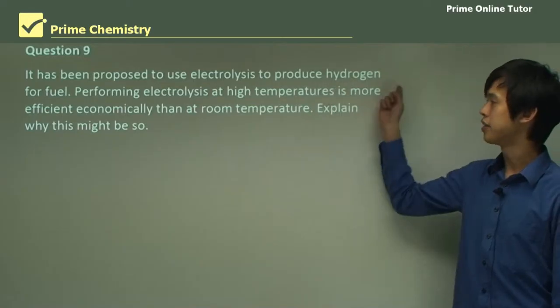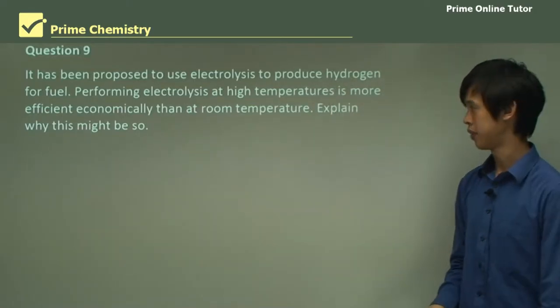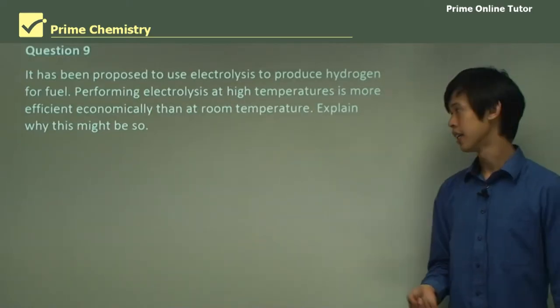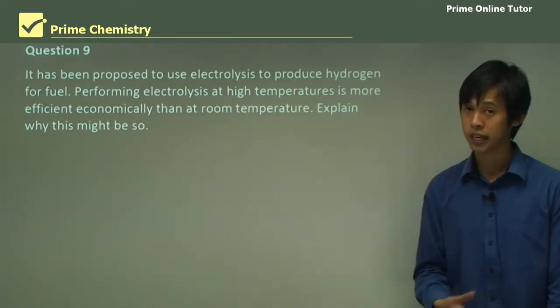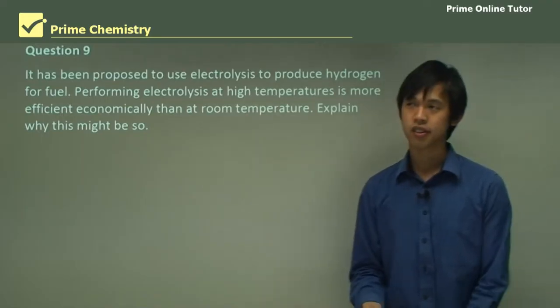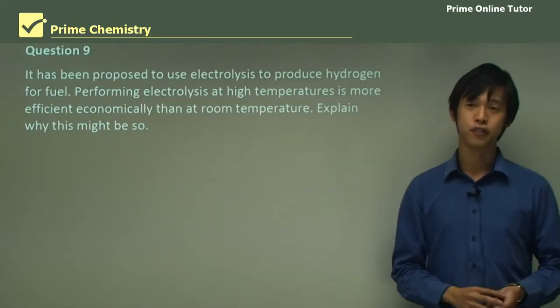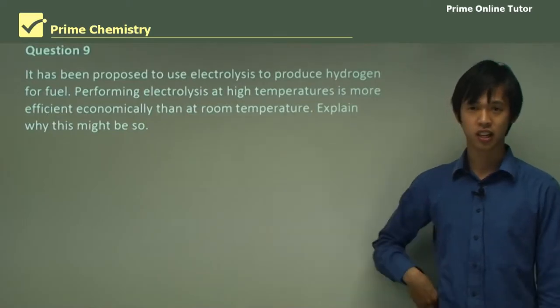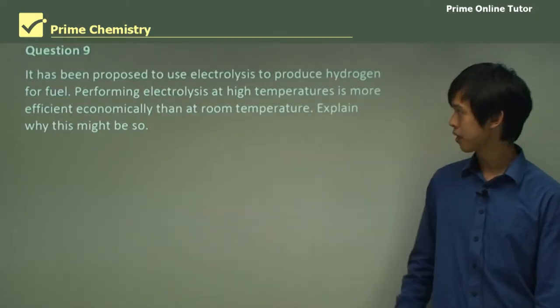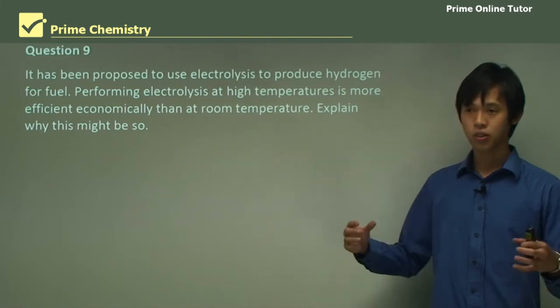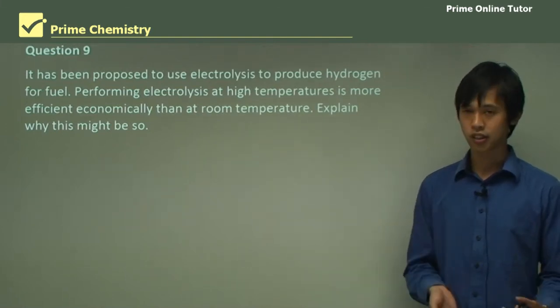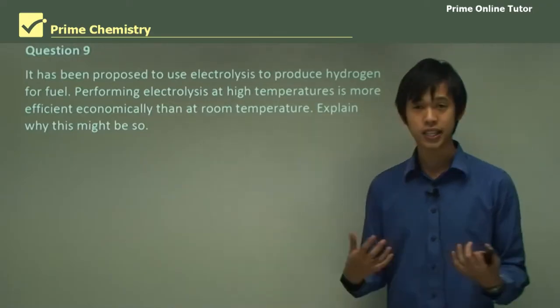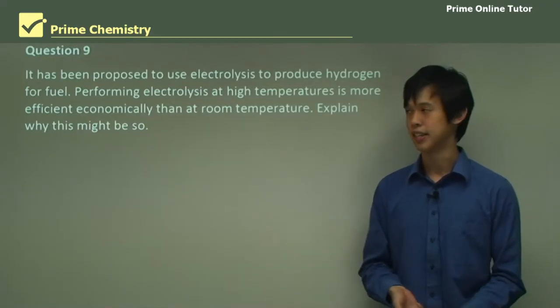Question 9: It's been proposed to use electrolysis to produce hydrogen for fuel. Performing electrolysis at high temperatures is more efficient economically than at room temperature. Explain why this might be so. This is sort of just right out of left field for you guys. Just to try and get you thinking about electrolysis and chemical reactions in general. It seems like high temperature electrolysis, making the water hotter, seems to be better than leaving it at room temperature and electrolyzing it.